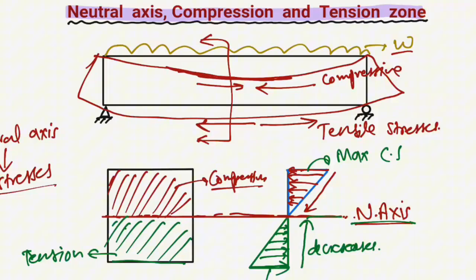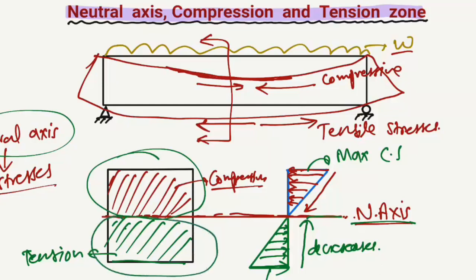So I hope you generally followed what's going on here in terms of calculating the neutral axis location for the simply supported beam with the uniformly distributed load acting on it. This neutral axis position can vary depending on whether you have reinforcement added as well - currently we're just looking at a plain concrete beam, but this can vary with reinforcement too.